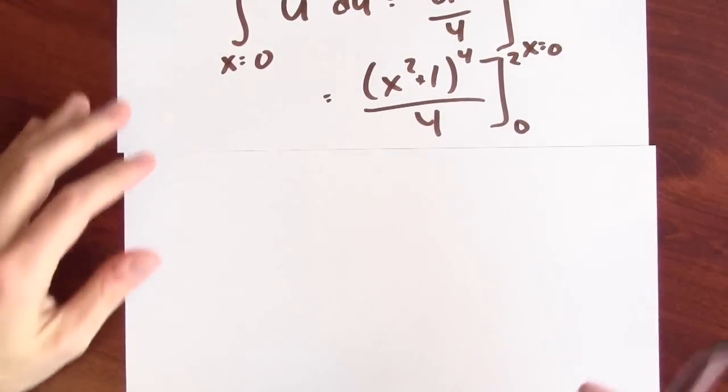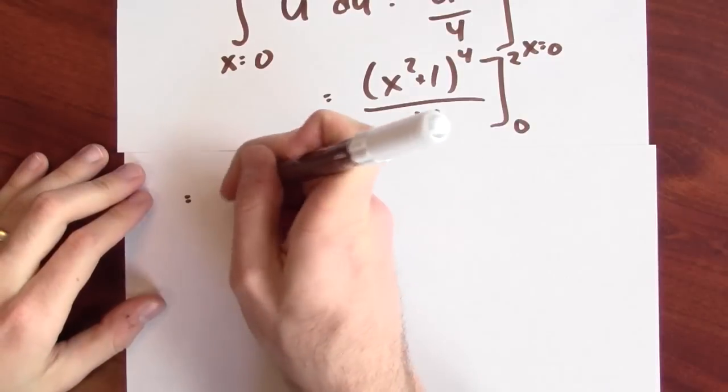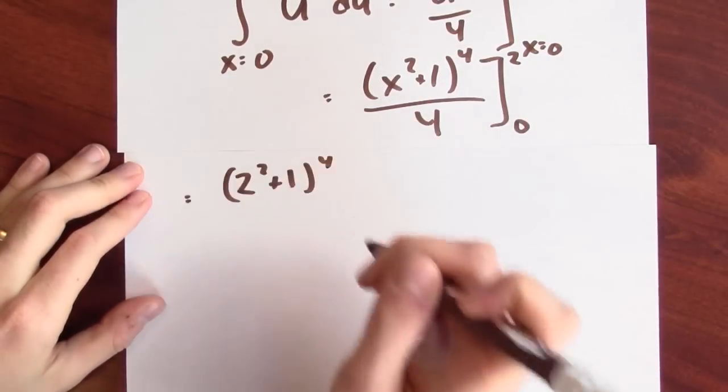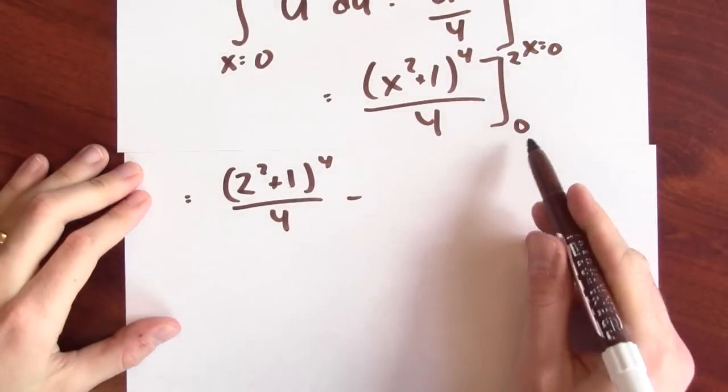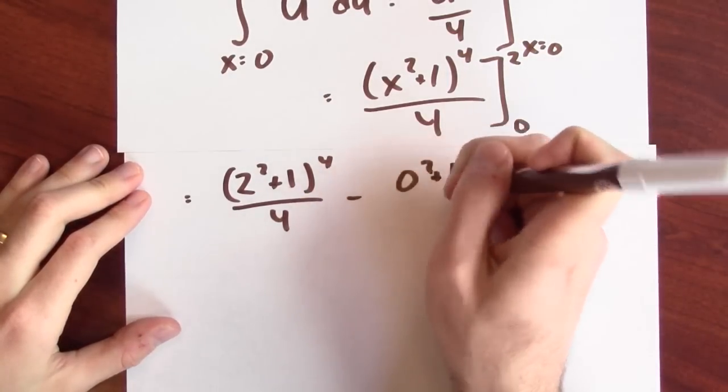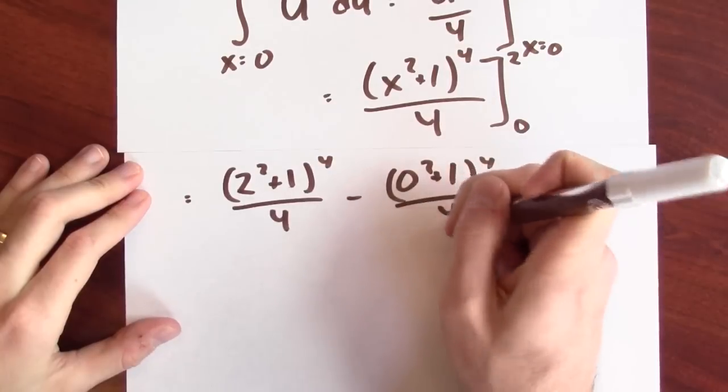When I plug in 2, I get (2 squared plus 1) to the fourth over 4. And when I plug in 0, I get (0 squared plus 1) to the fourth over 4.